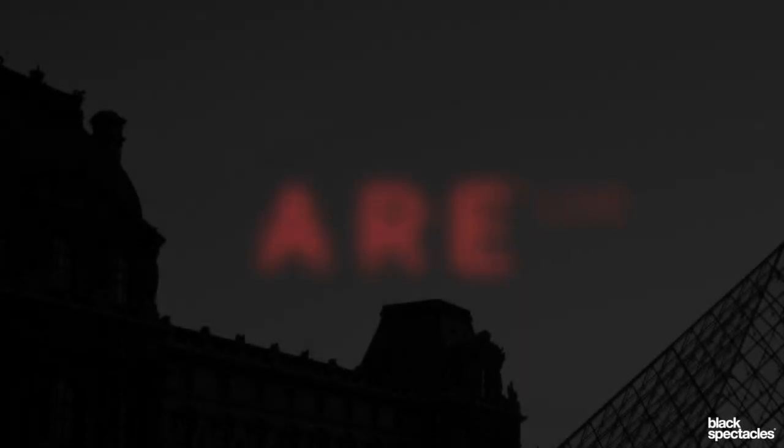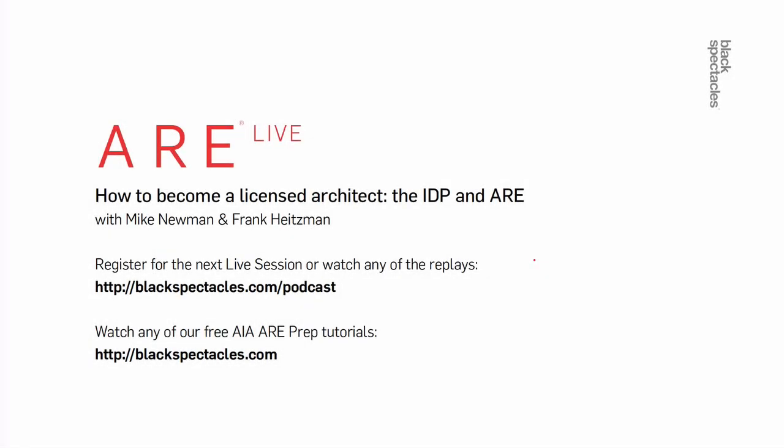Hey everybody, welcome to ARE Live. I'm Mark Teer, the founder of Black Spectacles, and today I'm with Mike Newman and Frank Heitzman. We're going to talk about the process for how to become a licensed architect. Specifically, we'll get into the IDP and what the ARE is. We'll start with education requirements, then do a deep dive into the Intern Development Program, and discuss the Architect Registration Examination and how to plan to pass it.